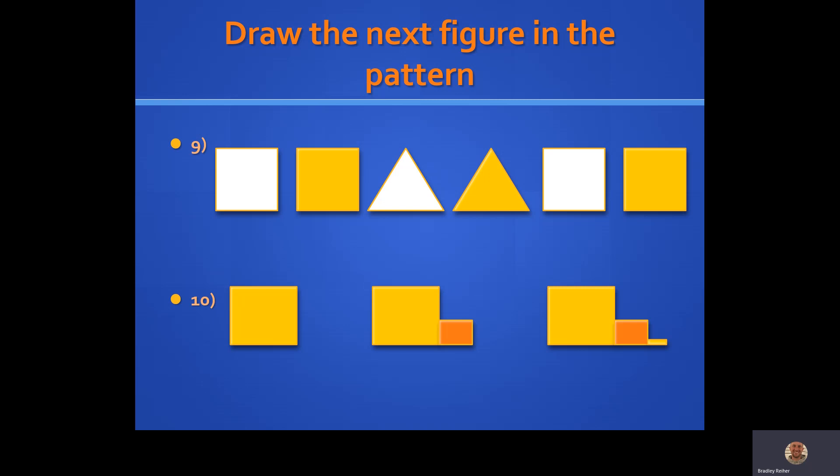So we're going white, yellow, white, yellow, white, yellow. So the next shape should be white, and it should be a triangle.